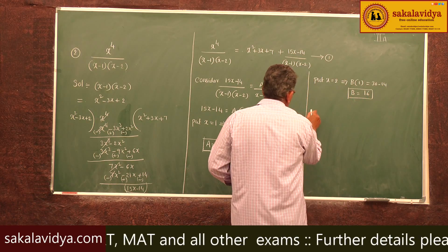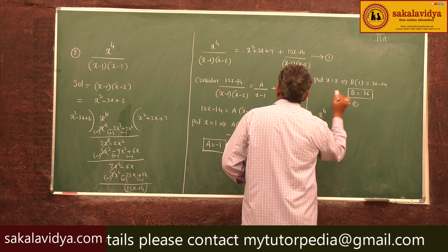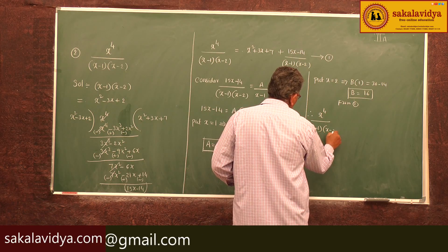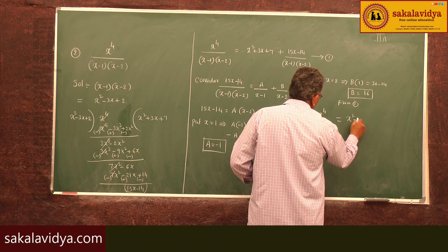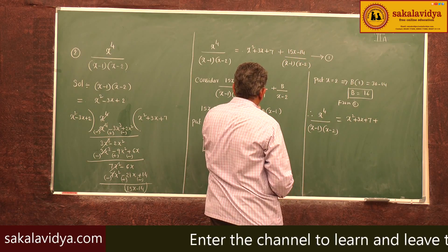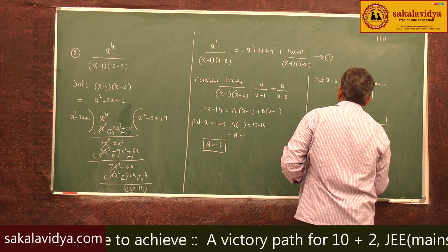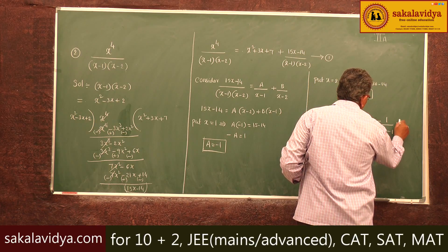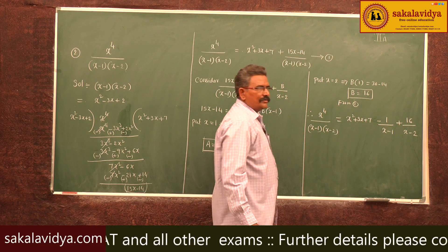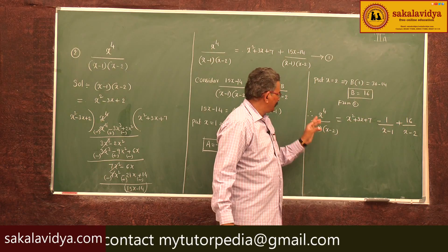Therefore, from equation 1, the partial fractions of x⁴ / [(x-1)(x-2)] are: x² + 3x + 7 + (-1)/(x-1) + 16/(x-2). Hence we have evaluated the partial fractions.